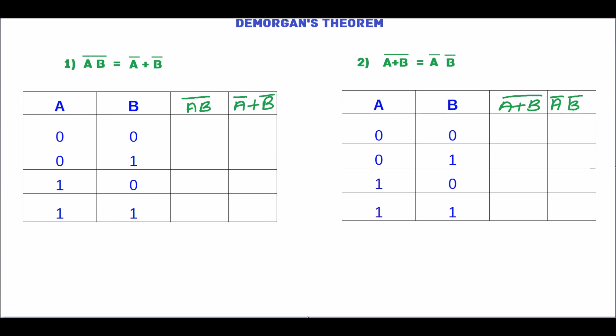In this tutorial, we will see De Morgan's theorem. The first theorem is: AB complement equals A complement plus B complement. We will prove this.